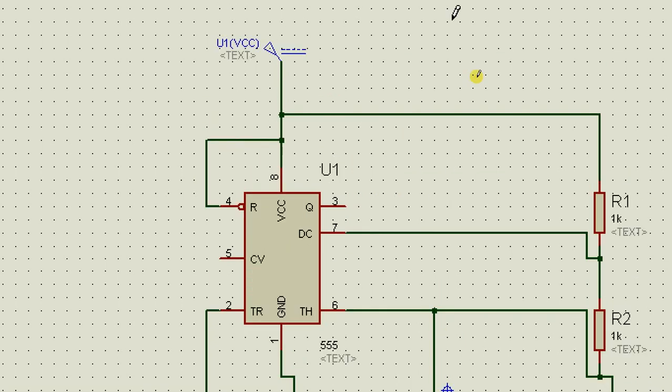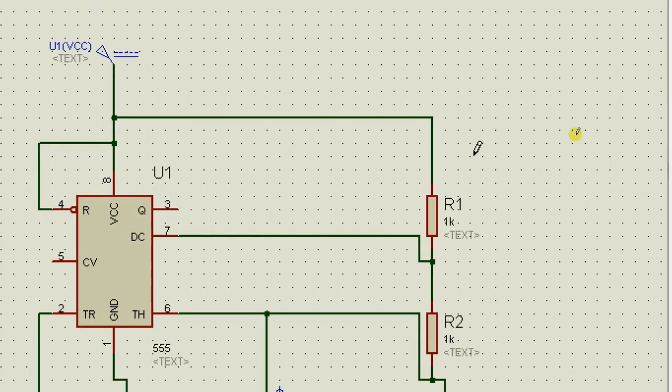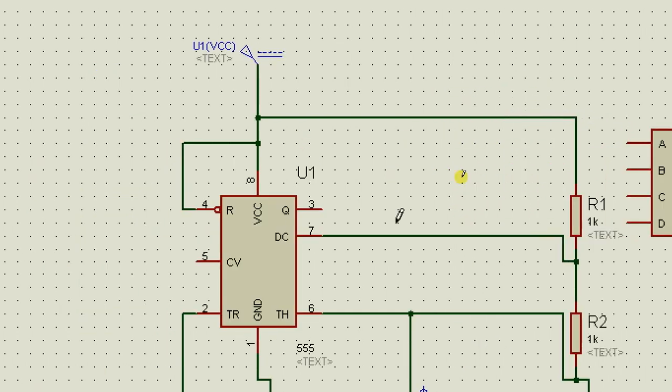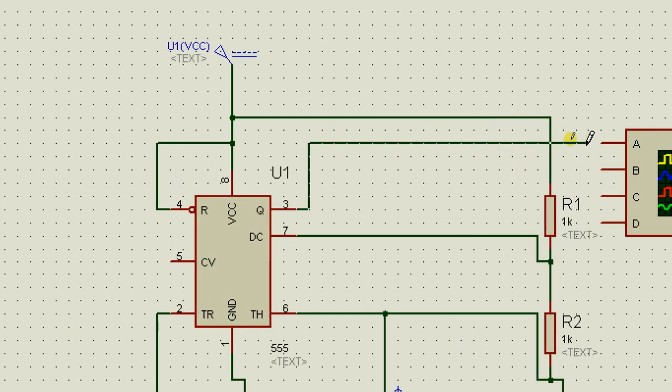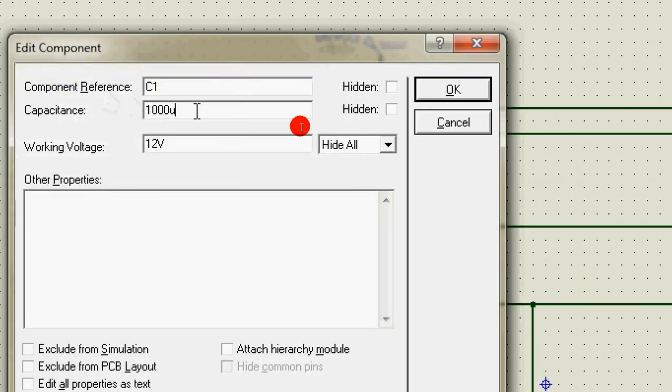You can leave pin 5 unconnected and it will assume a value of 2/3 of the supply. Let's connect our oscilloscope across the output and see what kind of waveform we get.